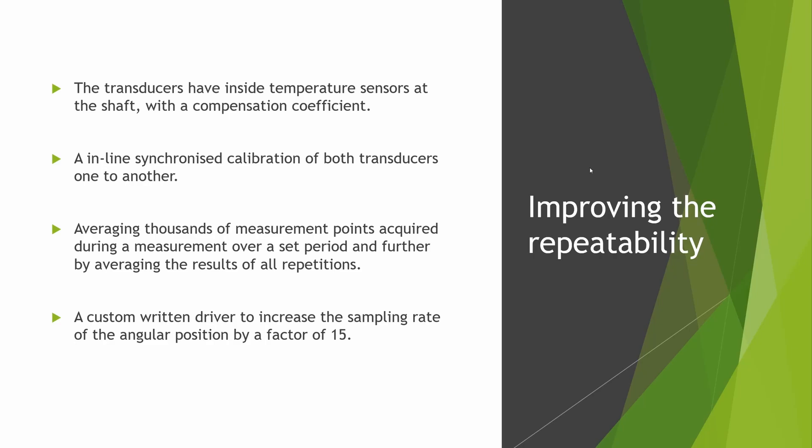It's important to know that when reporting accuracy, repeatability, and sensitivity, those values only apply to a single sample measurement. However, because pedaling is a dynamic condition, we can record several thousand data points. Normally we record between 30 and 60 seconds, then repeat those measurements two or three times and take the average — first averaging all the thousands of measurements taken in those 30 to 60 seconds, and then averaging across the three measurement slots. This gives a very repeatable value when comparing the same setup over and over again.